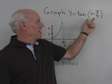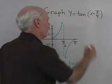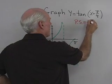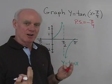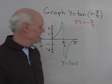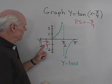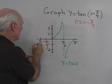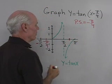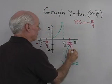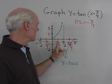Let's try another problem — a tangent graph: y = tan(x + π/4). This is going to look just like y = tan(x) except it has a phase shift of negative π/4. In green, I've drawn y = tan(x). This graph is going to start π/4 units earlier than the green graph. So instead of starting at 0, it starts at negative π/4. The asymptote, instead of being at π/2, is now going to be at π/4.